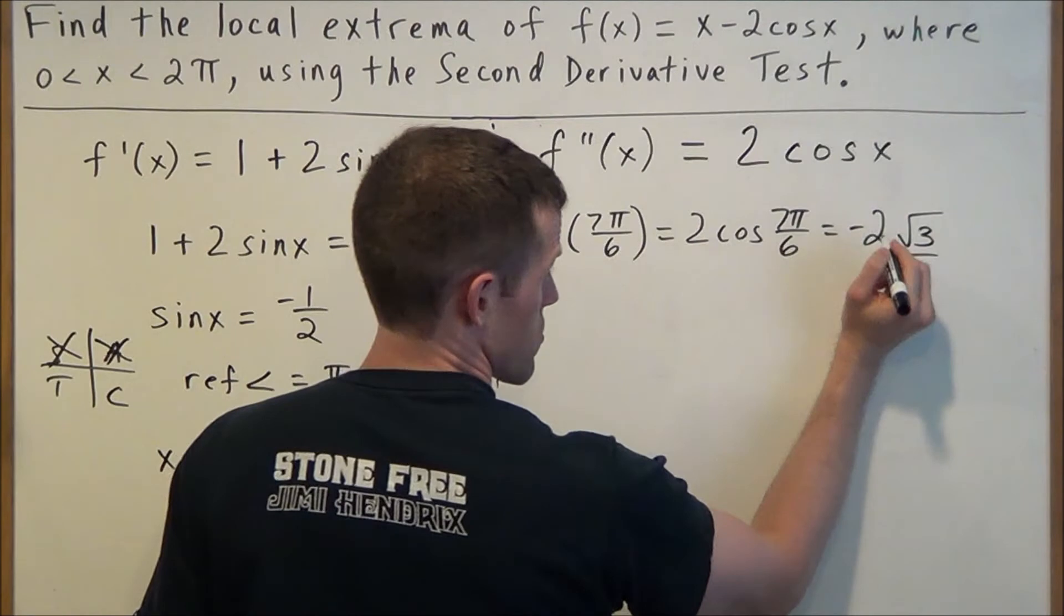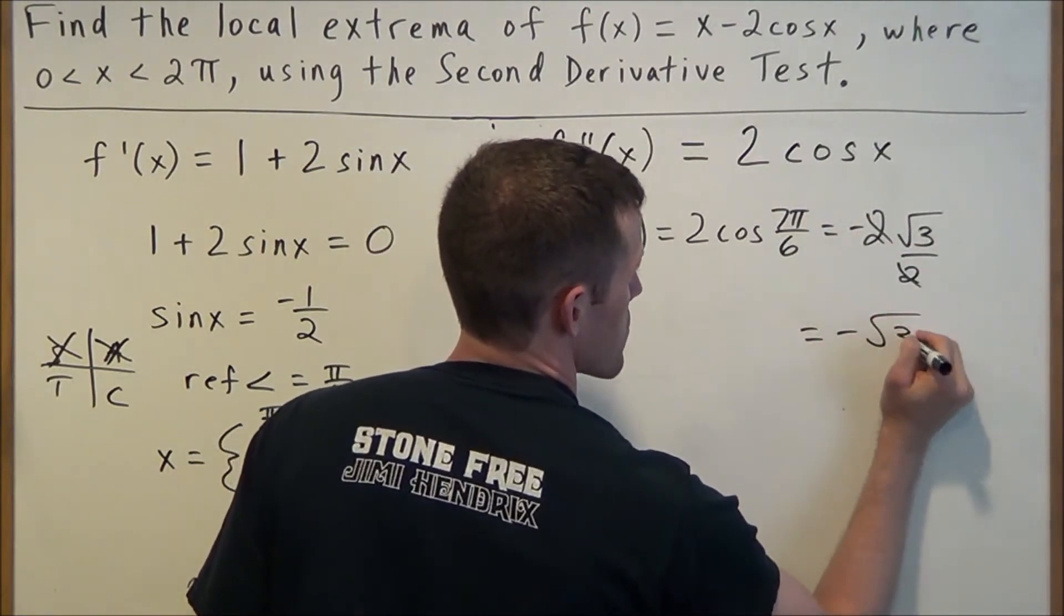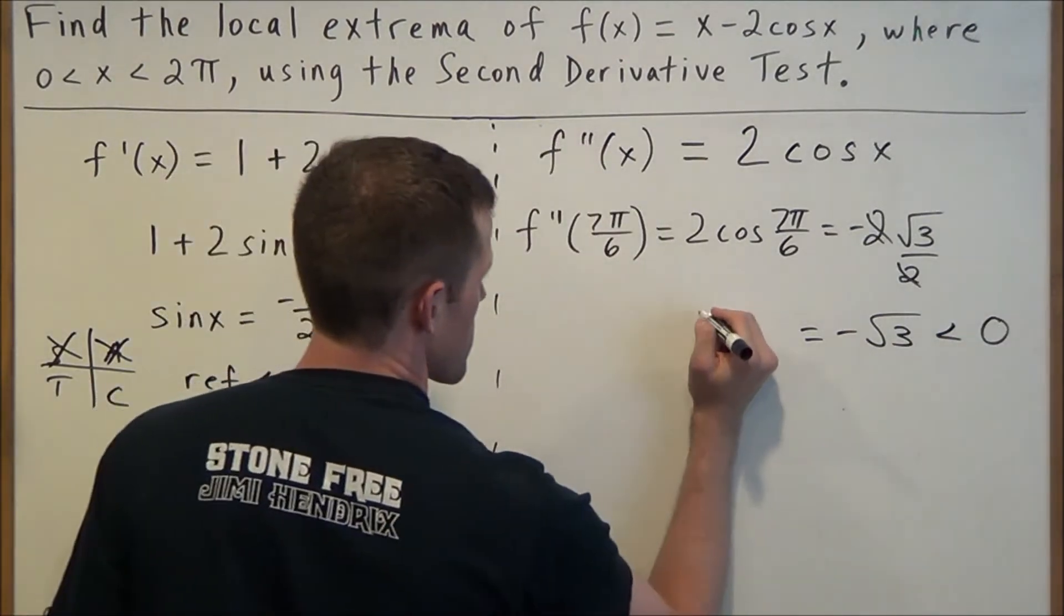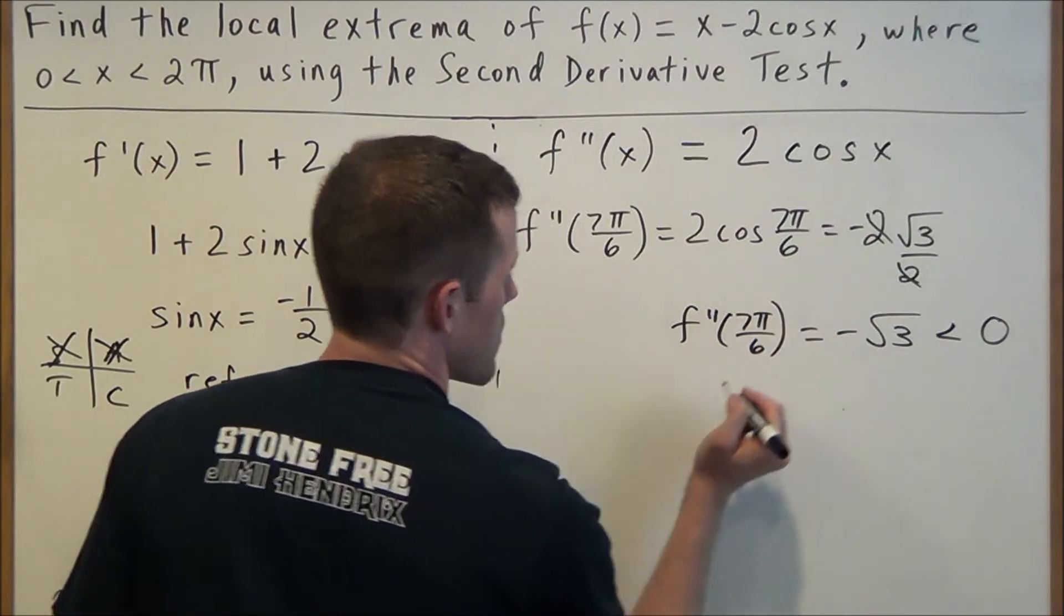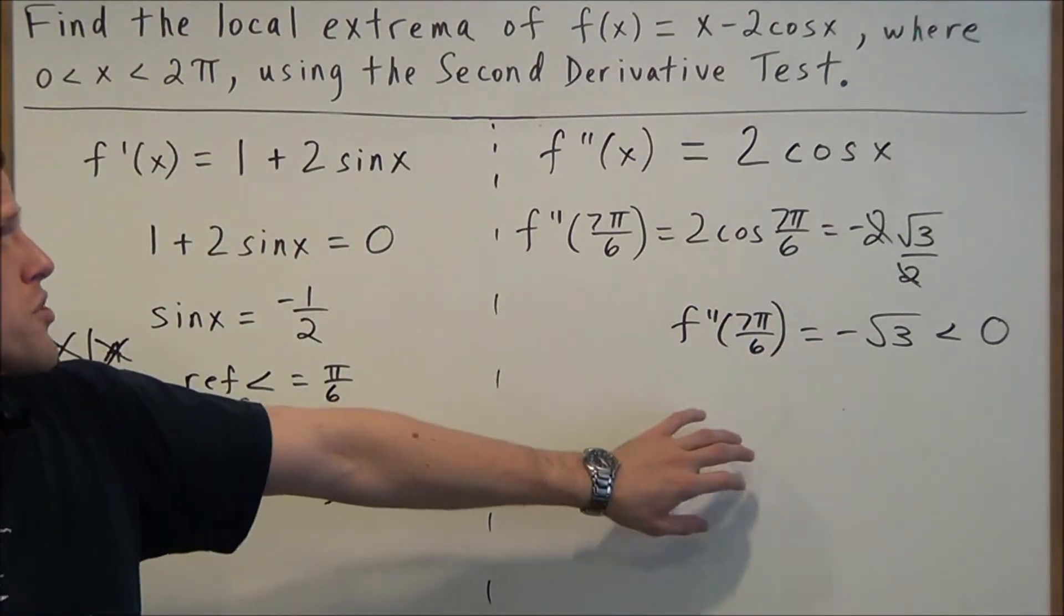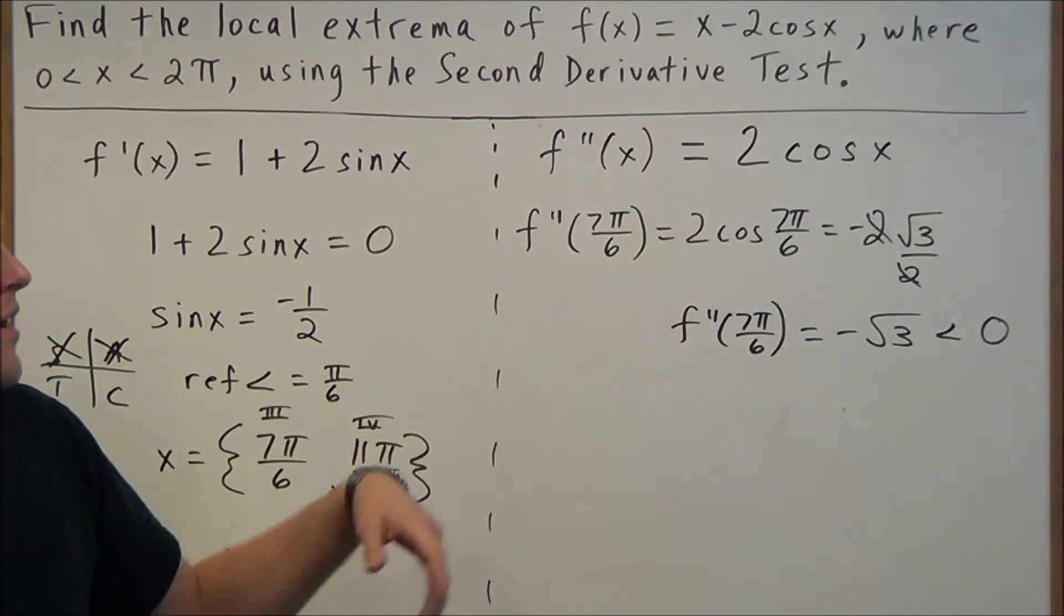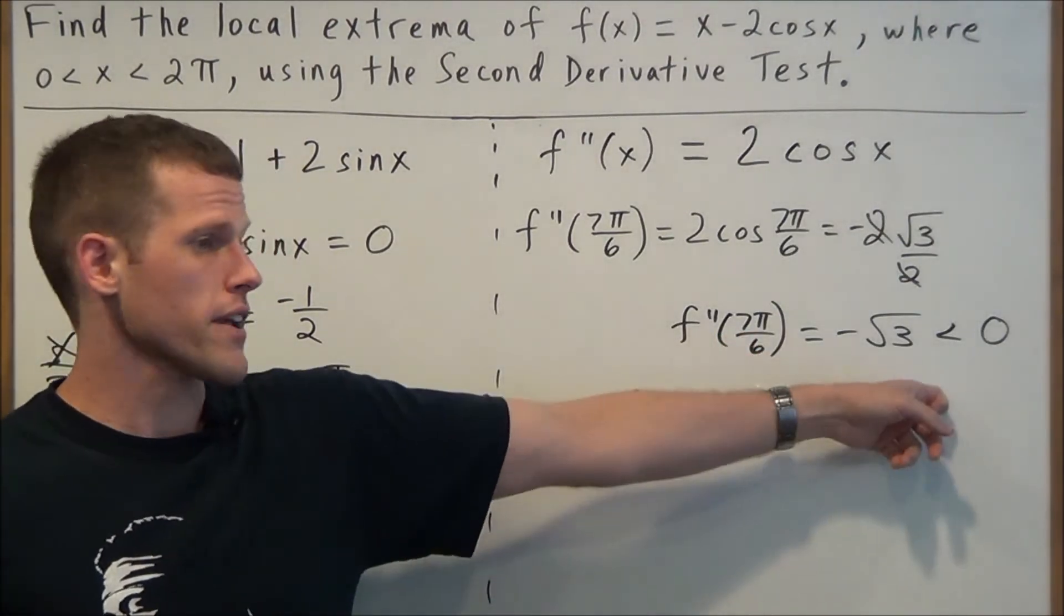So our solution here is going to work out to -√3, which is less than 0. So this tells us that f''(7π/6) is -√3, which is less than 0.